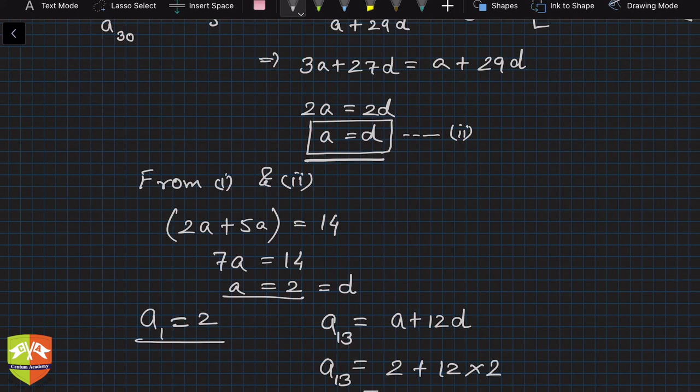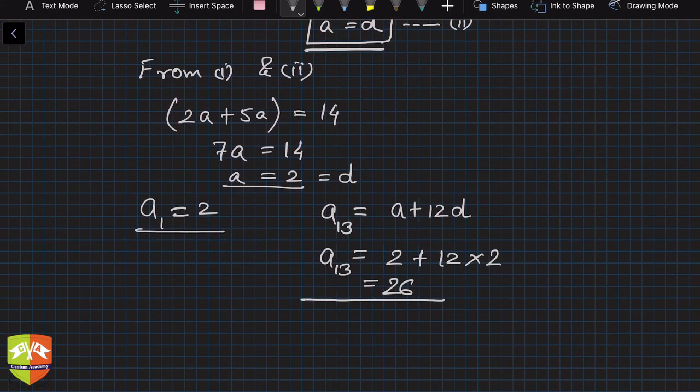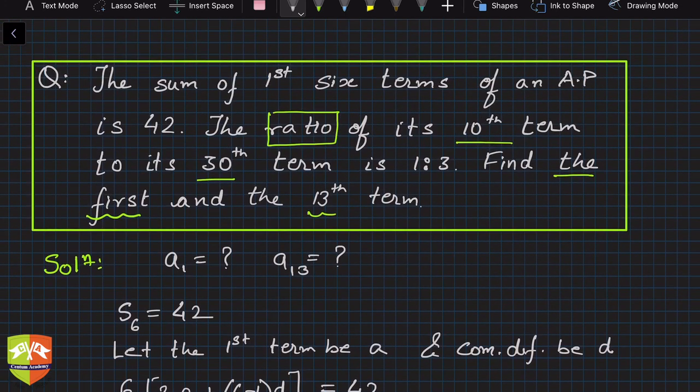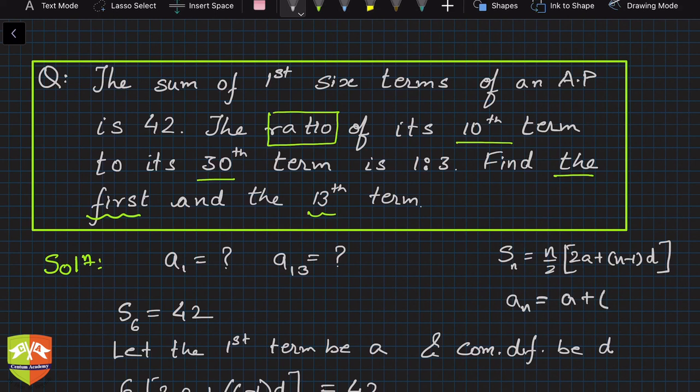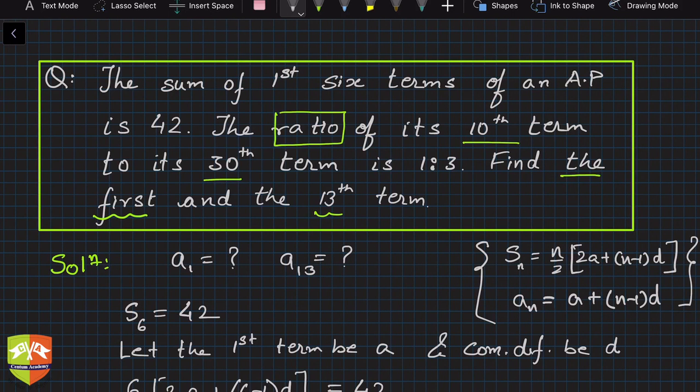So what was the learning? Sum of first six terms of an AP - you have to learn the formula Sₙ = n/2 times [2a + (n-1)d]. Application of this formula was there. Then the ratio of two terms were given, and ratio of two terms means you need to know aₙ formula: a + (n-1)d. These two things only were applied here, and with the given constraint or condition we could solve it and found out a₁ and a₁₃.